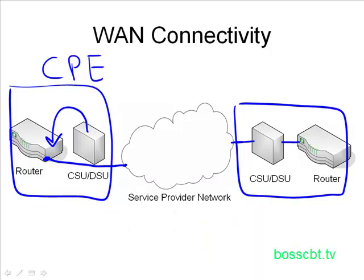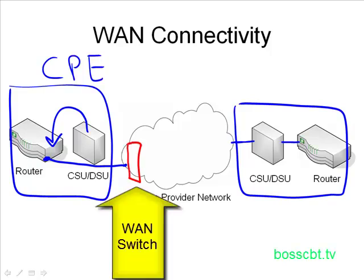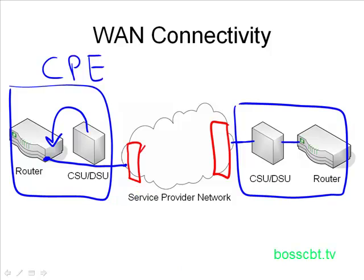If one piece is out of sync with the others, you get trouble on the circuit, and troubleshooting that can be a real pain. The telco provider has their equipment provisioned as well, and that's usually a WAN switch of some kind — on both ends. In between, the circuit is provisioned across a number of different hops along the service provider network and eventually pops out on the other WAN switch.